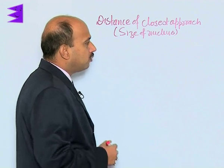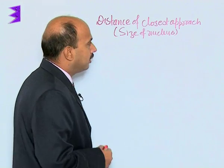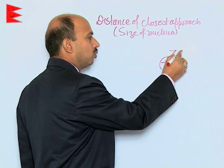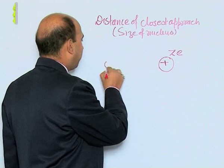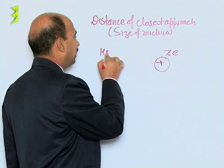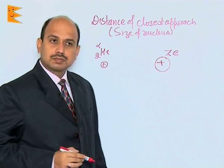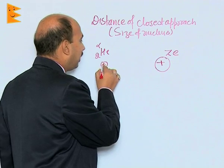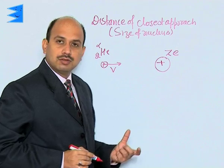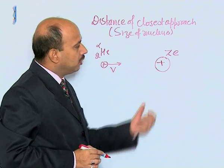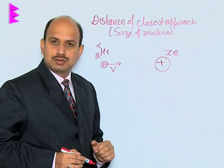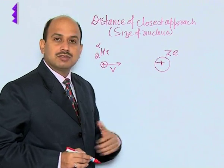Now, here we take an alpha particle and a nucleus. Suppose you have a nucleus with atomic number z, so its total charge is ze. There is an alpha particle — this is a nucleus of helium — moving with velocity v. In this explanation, we assume the nucleus is very heavy, and when the alpha particle strikes it there is no motion of the nucleus, meaning the motion of the nucleus is disregarded.